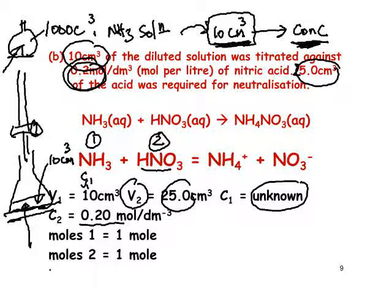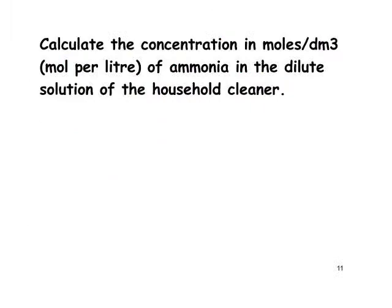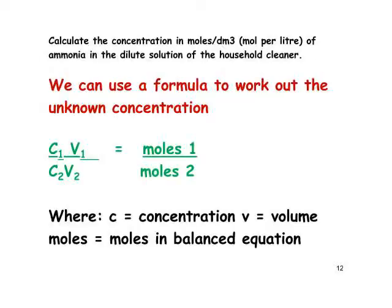The remaining two figures come from the balanced equation. How many moles of chemical 1 (ammonia) in the balanced equation? If there's no number shown, it's taken to be 1. How many moles of chemical 2 (the acid)? Again, taken to be 1. So in each case it's 1 — and we're ready to calculate the concentration of the ammonia. These questions often take you through it in parts, so let's do it bit by bit.